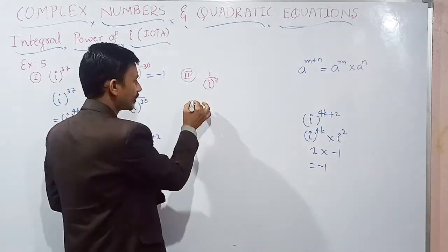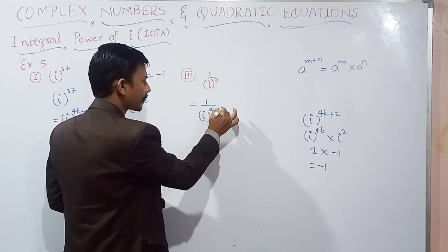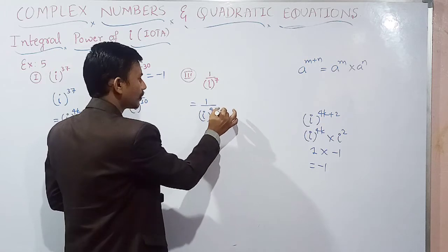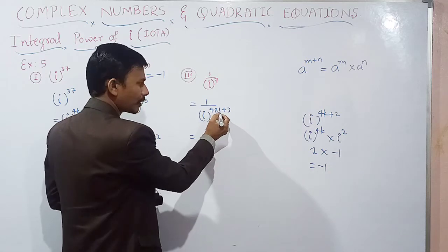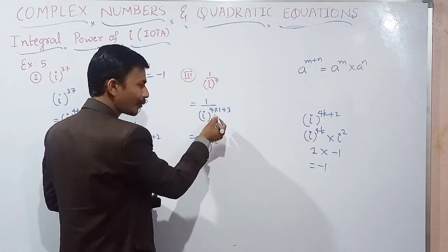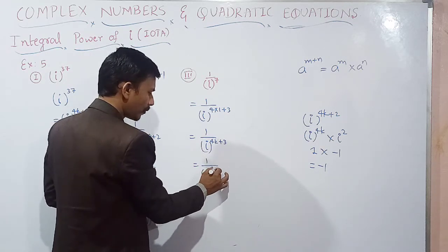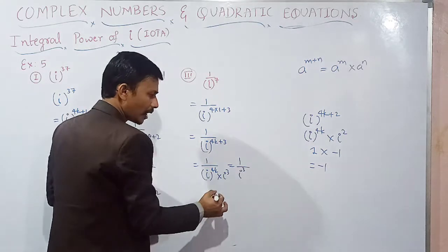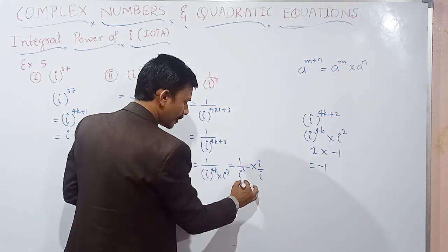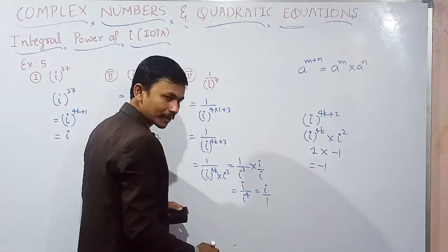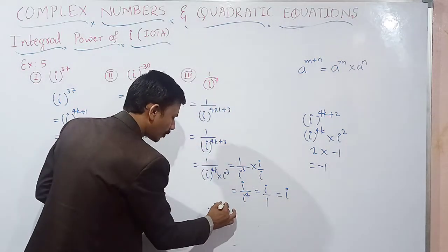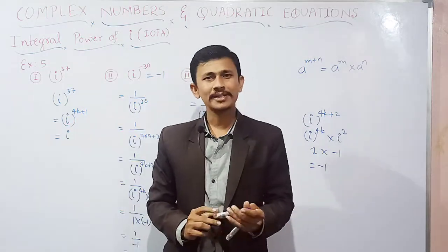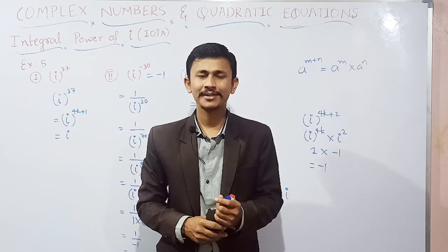Next example: i to the power minus 7. We can write this as 1 divided by i to the power 7. Now 7 is of the form 4k plus 3, since 4 times 1 plus 3 equals 7. i to the power 4k plus 3 equals minus i, so 1 divided by minus i. If you like this video, please comment and subscribe to the channel. Thank you.